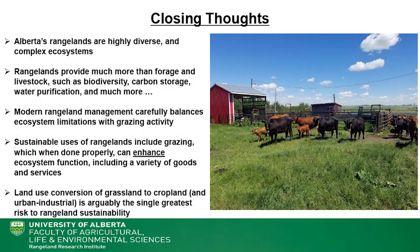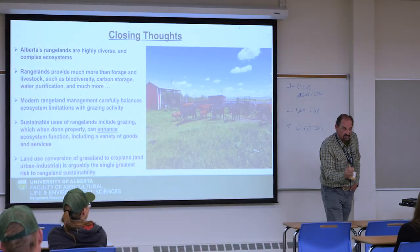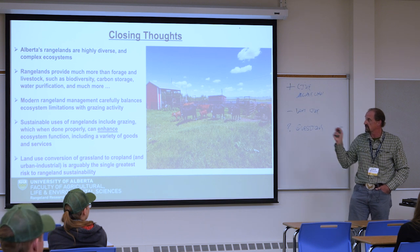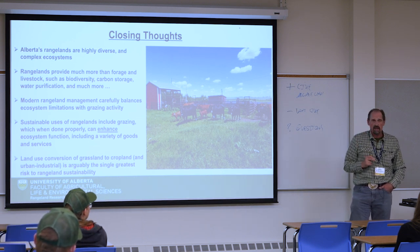Hopefully I've been able to convince you that we have an incredible scope and diversity of rangelands. They provide way more than livestock forage — including biodiversity, carbon, and other ecosystem services. Modern management balances what we're taking off with what we're leaving in order to maintain all of those ecosystem functions. Sustainable grazing can occur; it's based on having a sustainable stocking rate and adjusting how we graze. Whether you go into agriculture or not, or if you're a consumer of agricultural products, think about how food was produced.